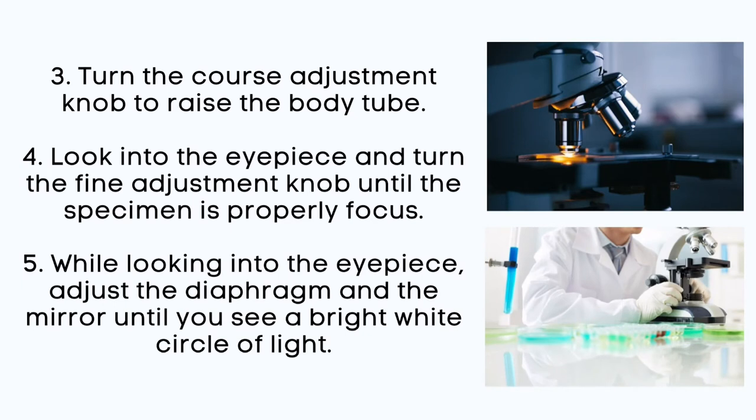Turn the coarse adjustment knob to raise the body tube. Then, look into the eyepiece and turn the fine adjustment knob until the specimen is properly focused. While looking into the eyepiece, adjust the diaphragm and the mirror until you see a bright white circle of light.